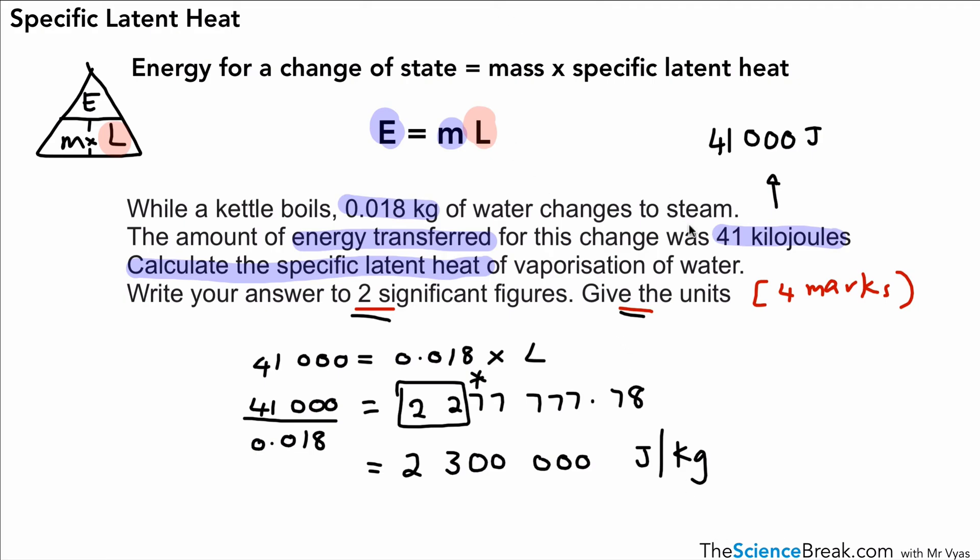So there we have it—there's our answer for this question. Quite a lot we've gone through. We've talked about what we mean by specific latent heat, a couple of definitions within that definition, and we've looked at the equation and done a couple of examples. You may need to go over this one or two more times, but other than that, that's the end of this video. Thanks for watching, and I'll see you again soon.